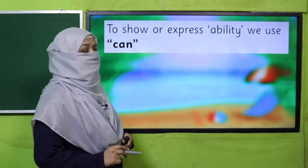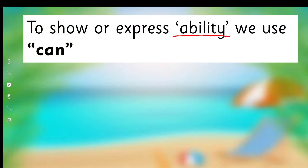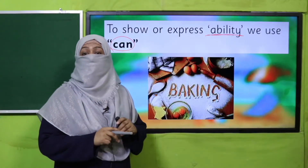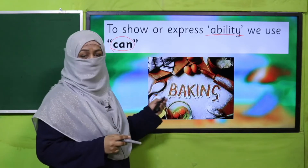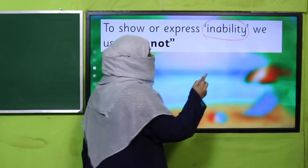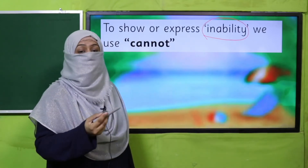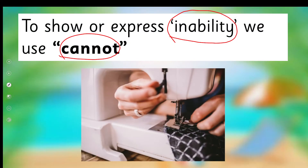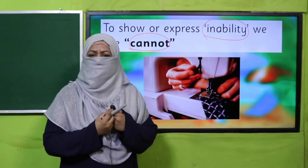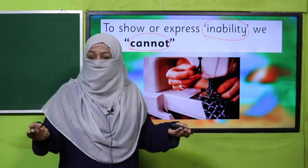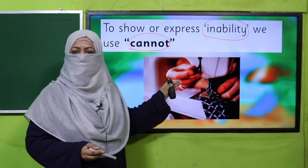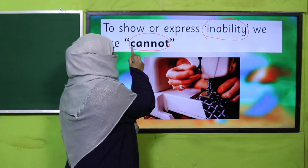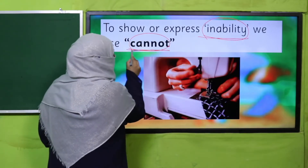To show ability, we use 'can.' For example: 'I can bake' — this shows my ability. To show inability, something I am not able to do, we use 'cannot.' For example: 'I cannot stitch cloth, but I want to learn it.' I cannot fly because I am not made for that. Right now because I have not learned stitching, I am not able to do it — that's why I say 'I cannot do it.'